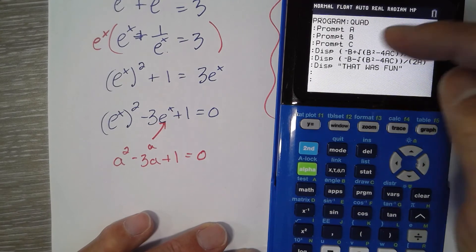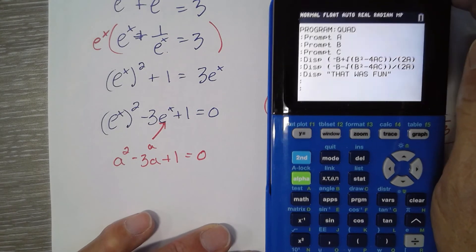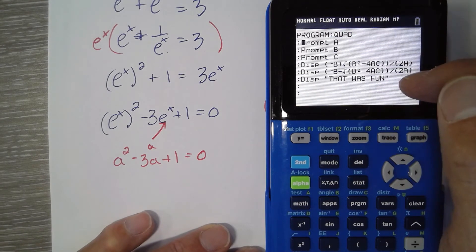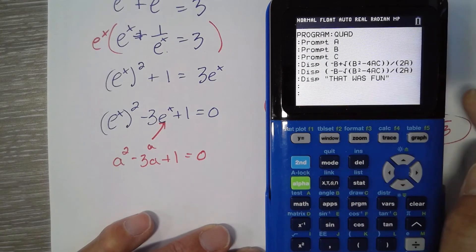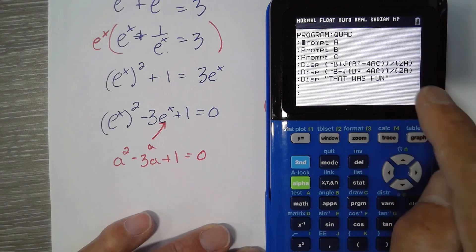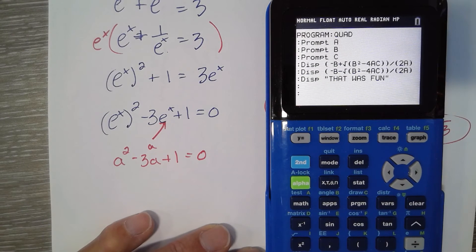So you have to prompt A, prompt B, prompt C. So the input, the user has to tell you what three numbers to use for A, B, and C. Then you can display one answer, and then display the other answer. One is plus, and one is minus, and I just wrote a message at the end. So you could take a picture of that. You could type that into your calculator, and you'd have the quadratic formula.